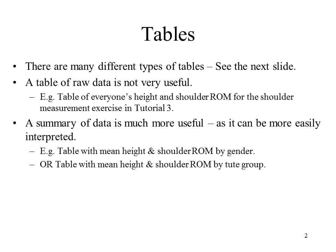A table of raw data is not very useful. An example would be a table of everyone's height and shoulder range of movement for the shoulder measurement exercise in tutorial 3 — you would have seen this table in the tutorial as you were gathering the information. A summary of data is much more useful because it can be interpreted much more easily. Examples of summary tables already shown in the sampling lecture include a table of the mean height and shoulder rotation of movement by gender, or by tube group, so you could see what the shoulder rotation of movement was in each tube group.